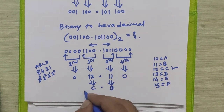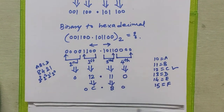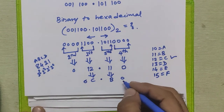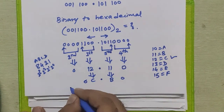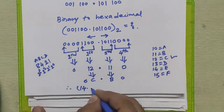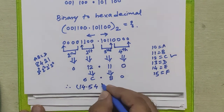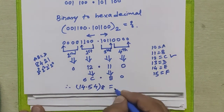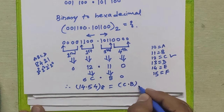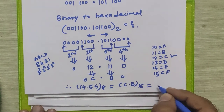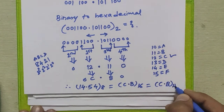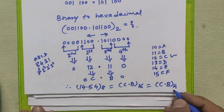The point remains as is. We can discard the leading zero and the trailing zero. So we can say that 14.54 octal is equal to C.B in hexadecimal. This is our answer.